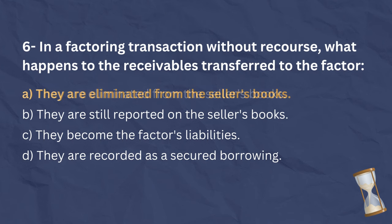The correct answer is A. In a factoring transaction without recourse, the receivables transferred to the factor are eliminated from the seller's books. The factor assumes the risks and rewards of collection, and the seller has no further liabilities related to those receivables.